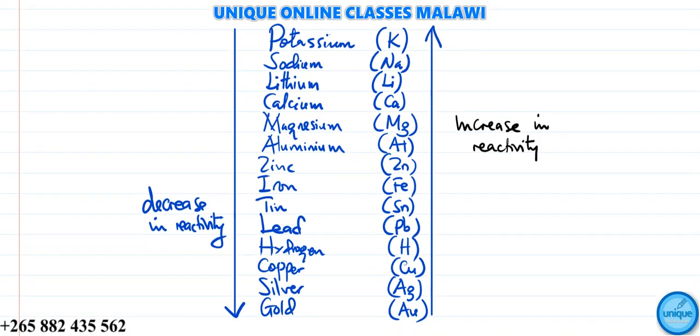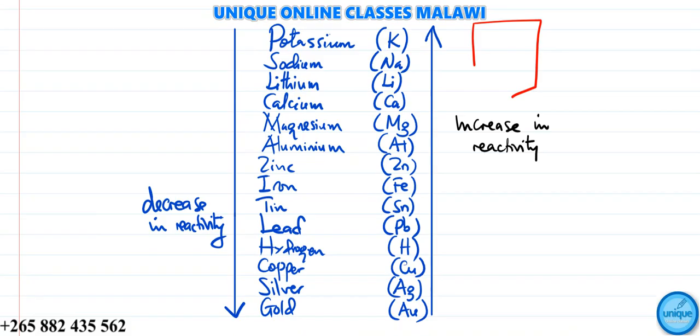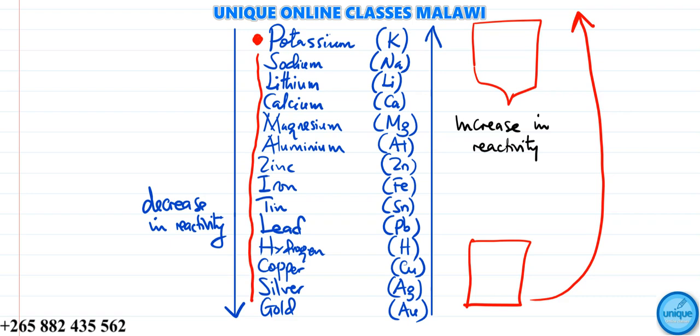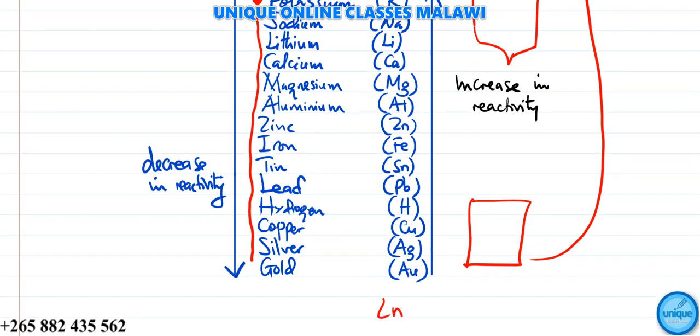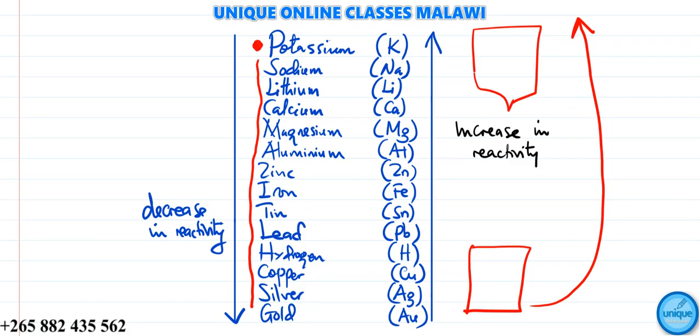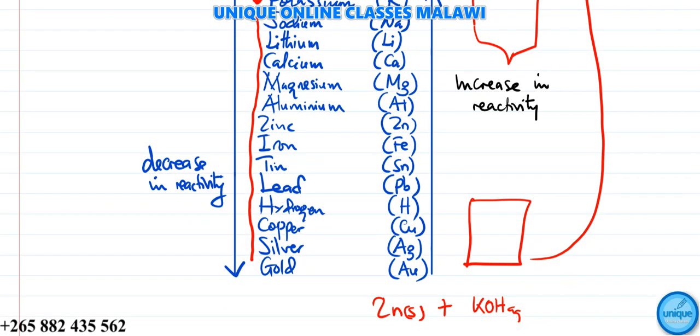This means that metals at the top can displace metals at the bottom, but metals at the bottom cannot displace metals at the top. For example, if we take a zinc metal and put it in a potassium hydroxide solution, nothing will happen. It will be impossible for zinc to displace potassium.